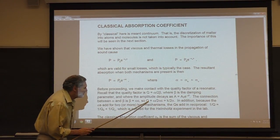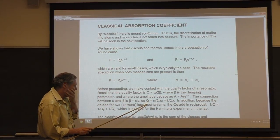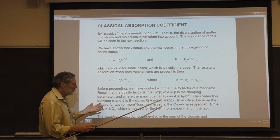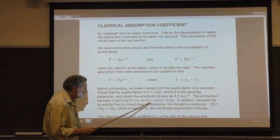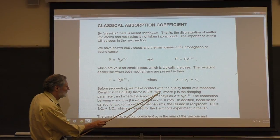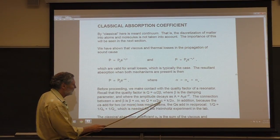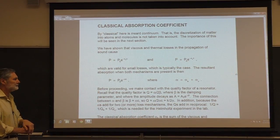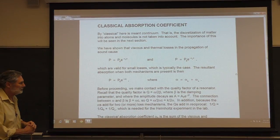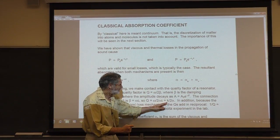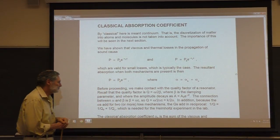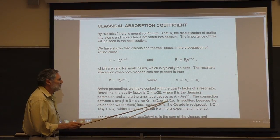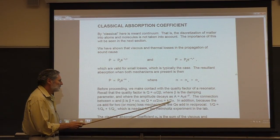To connect with the standing wave you need to add two counter-traveling waves. Our quality factor, making the substitution beta equals alpha times c, gives us this expression — the wave number divided by two times the absorption coefficient. This is the quality factor from a traveling wave point of view, and we're going to encounter this later in the course.